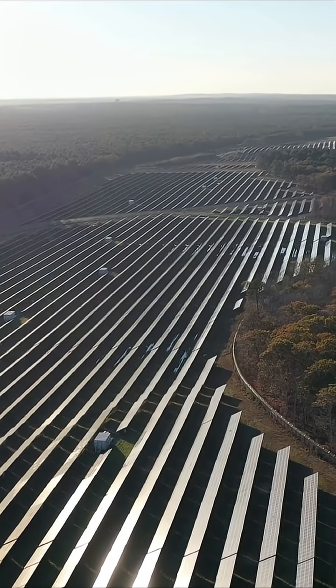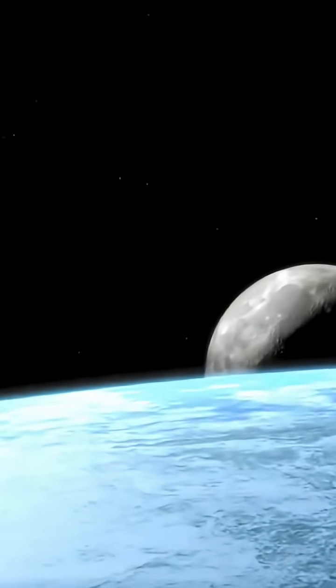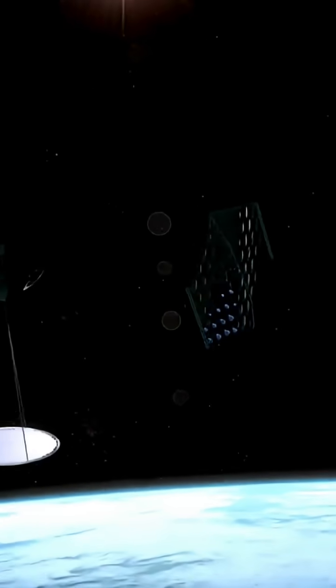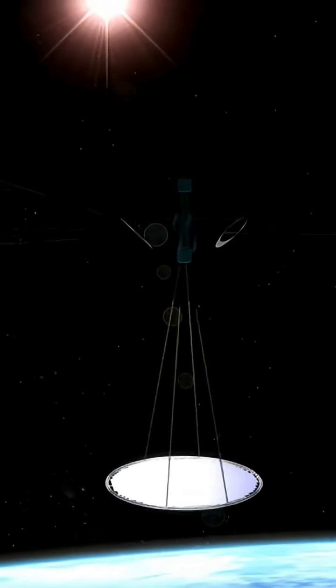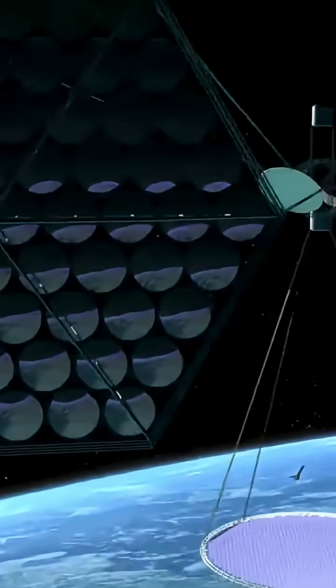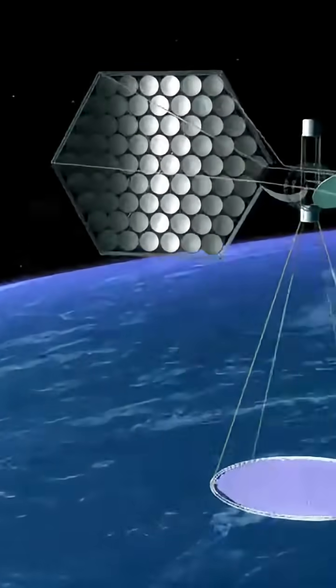Here's the jaw-dropping part. Scientists in China and the US are testing orbital solar stations that beam energy from space to Earth using microwaves. Unlike ground panels, these satellites collect constant solar energy, no clouds, no darkness, no downtime.